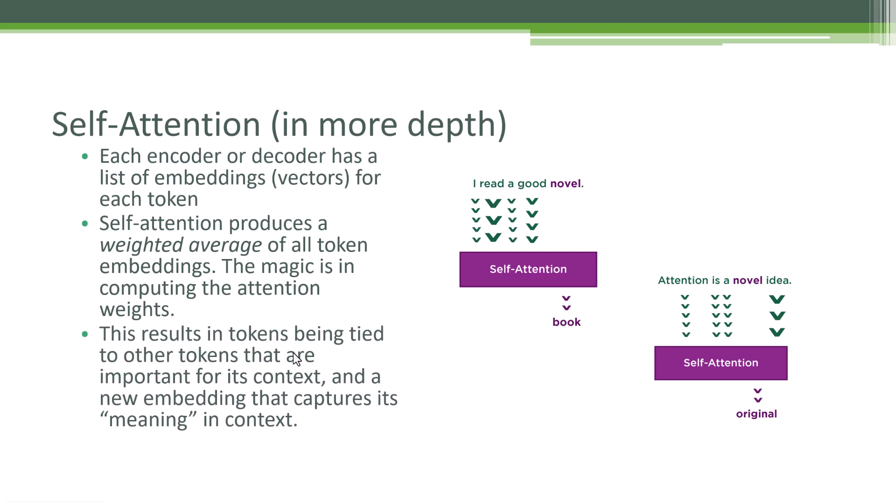So another way of saying it here, this results in tokens being tied to other tokens that are important for its context. And this produces a new embedding that captures the meaning of that token within its context. So let's review. For every token, we're going to compute attention weights to the other tokens. Self-attention's algorithm will then spit out another embedding. And that embedding, by virtue of where it is in that embedding space, will encapsulate the meaning of that token because it will be near other tokens that mean the same thing. That's it in a nutshell.